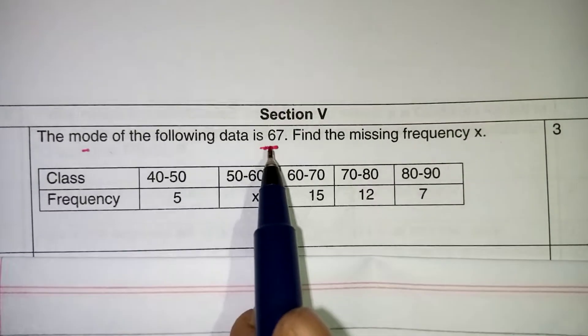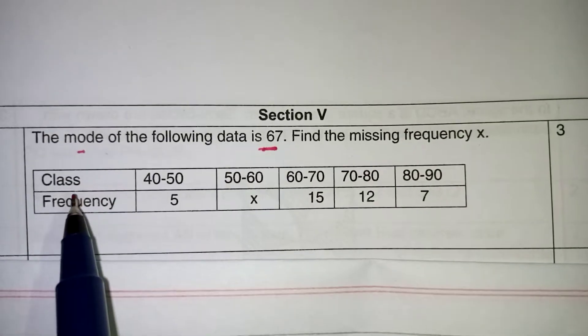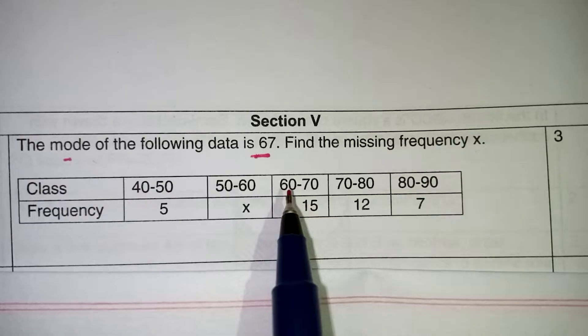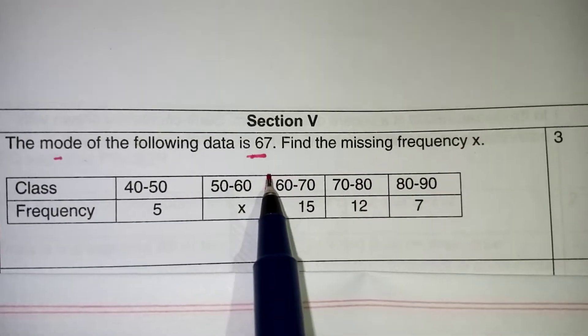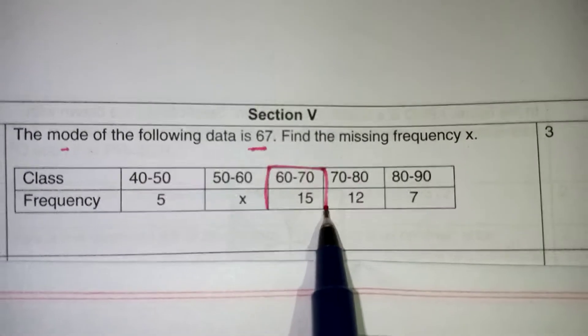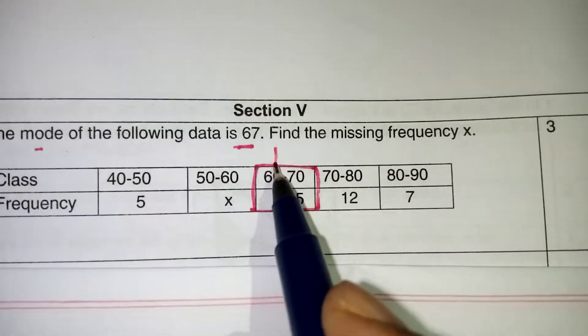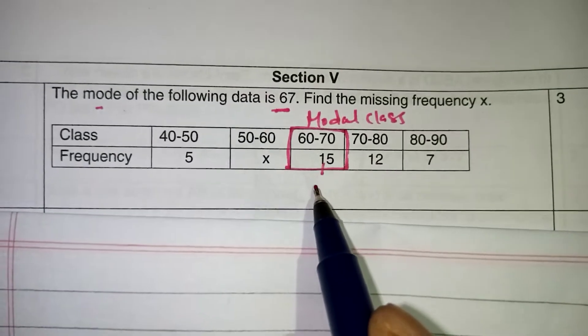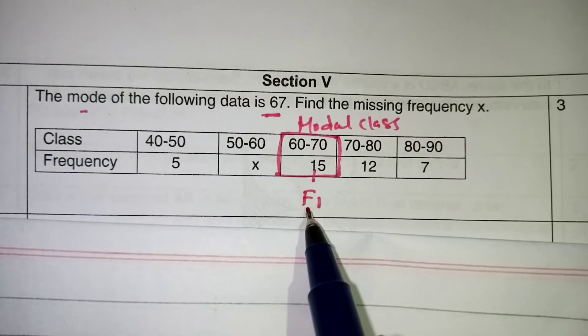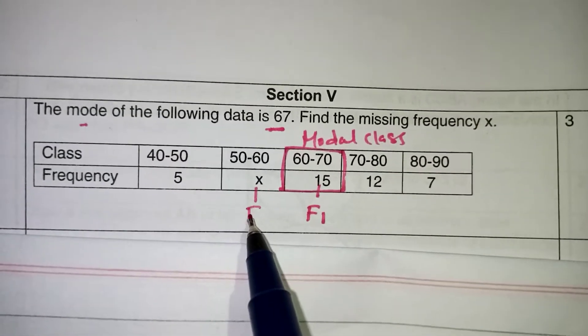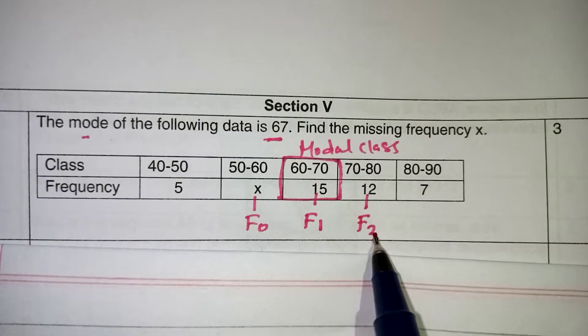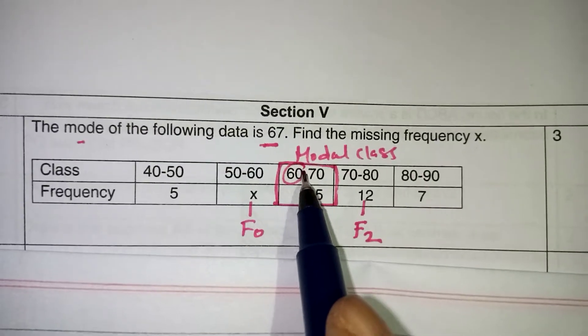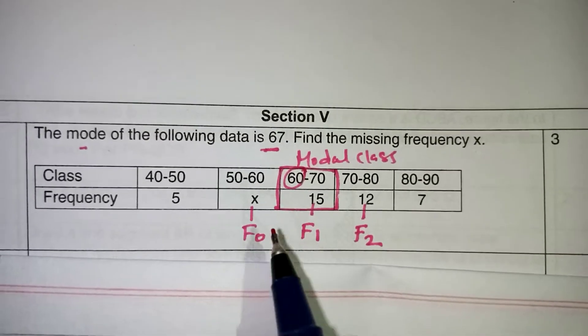So the 67 will come in between which two intervals we have to see in the class interval. In this class interval 67 will lie between 60 and 70. So we have to take this as our modal class. So if this is a modal class then 15 will be taken as F1, before number will be taken as F0 and after number will be taken as F2. And the modal class value, the 60 will be taken as a lower limit L.